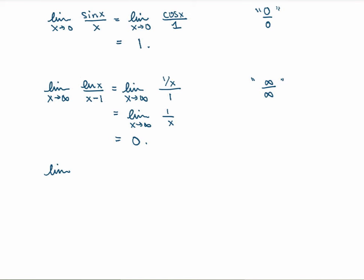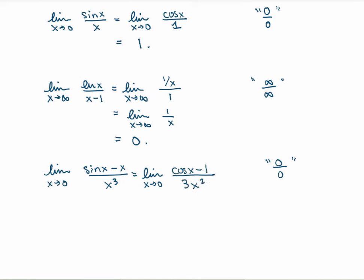Let me do one last example. Suppose I have the limit as x goes to 0 of sin of x minus x over x cubed. As x goes to 0, sin of x minus x equals 0 and the denominator is also 0, so that's of type 0 over 0. I use L'Hôpital's rule. The derivative of the numerator gives me cos of x minus 1 over 3x squared. But now as x goes to 0, this is still of the type 0 over 0, since cos of x minus 1 is 0 and 3x squared is still 0. So I cannot evaluate this yet. But this is still 0 over 0, so I can apply L'Hôpital's rule again. Sometimes you may have to apply the rule more than once — that's perfectly fine.